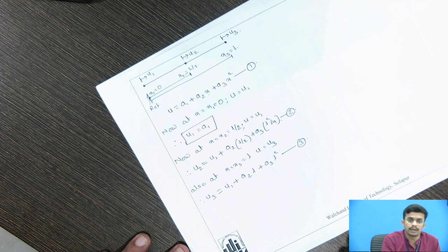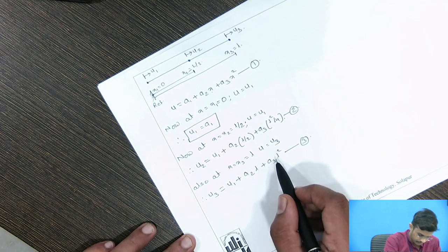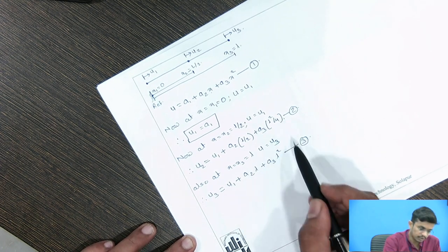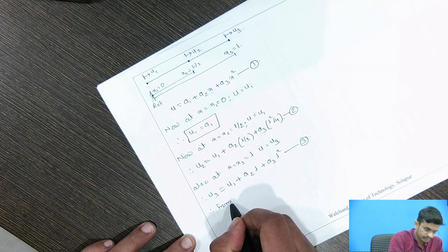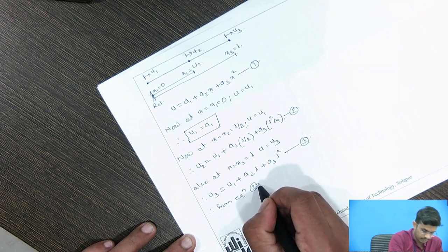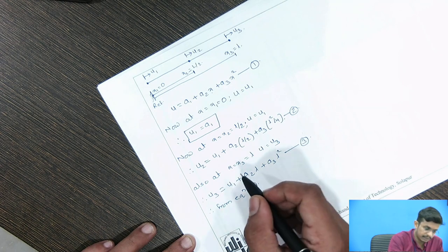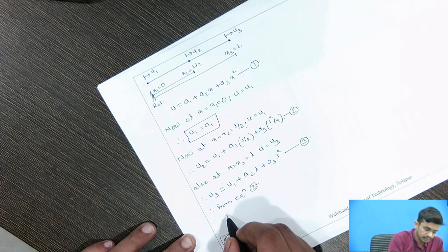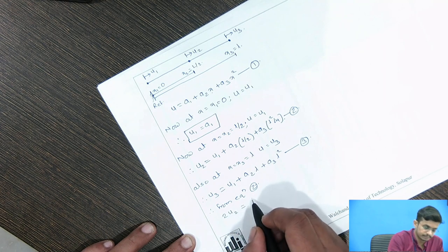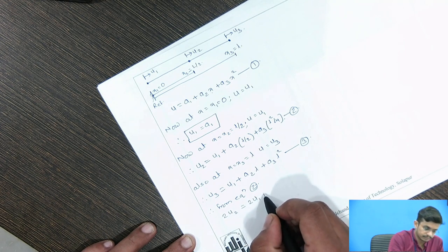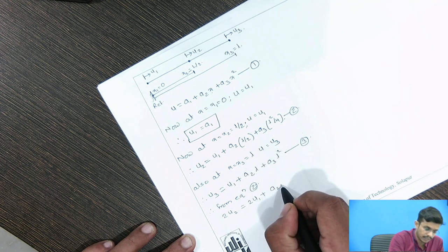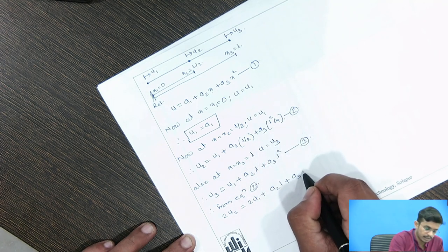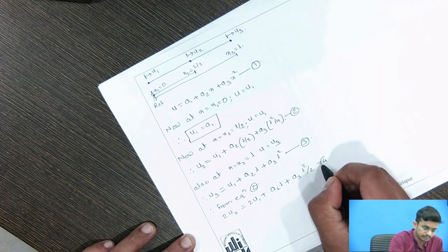Now we need to calculate the values of constants A2 and A3 by solving equations 2 and 3. Multiplying equation 2 by 2, we get: 2U2 equals 2U1 plus A2·L plus A3·(L²/2). This is our equation 4.